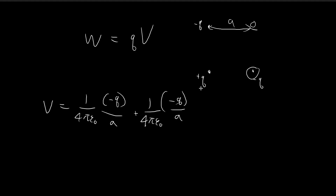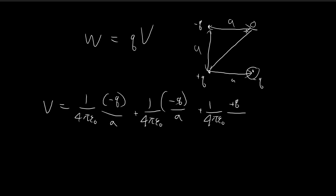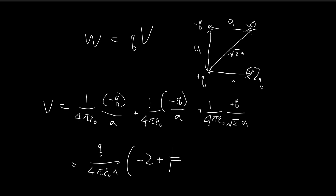Then we do something similar for the positive q charge. We have one over four pi epsilon, times positive q, divided by the distance. Since the two sides are each A and this is a square, we use the Pythagorean theorem — the diagonal distance is just the square root of two times A. So we divide by that distance.